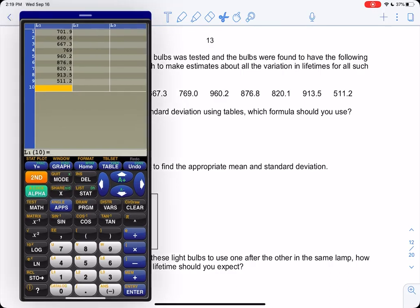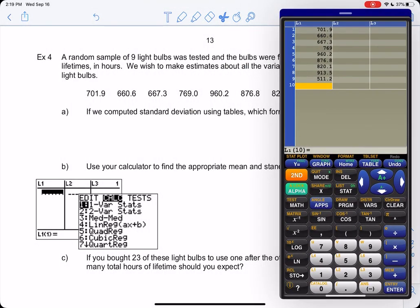So let's preview what it looks like on the calculator. We have a random sample of nine light bulbs, so sample is important - that means we'll use x̄ and s.